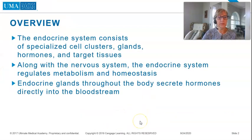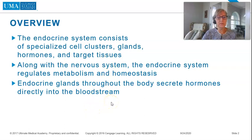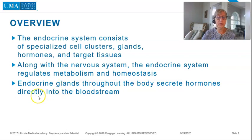The endocrine system consists of specialized cell clusters, glands, hormones, and target tissues. Along with the nervous system, the endocrine system regulates metabolism and homeostasis. Endocrine glands throughout the body secrete hormones directly into the bloodstream.